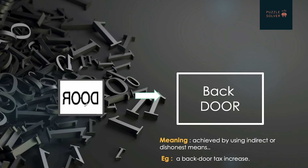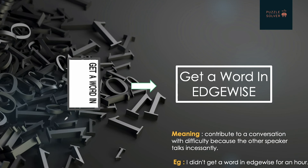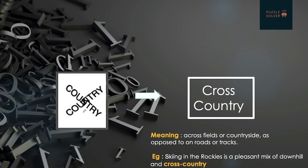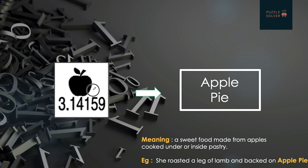Next, 'pineapple cake' but 'pineapple' is written inverted, so it is 'upside down pineapple cake'. Next is 'door' but the direction is backward, so it's 'back door'. Next, 'get a word in' is written along one edge of the box, so it is 'get a word in edgewise'. Two countries are crossing each other, so it's 'cross country'. Here apple is present and the value of pi — pi equals 3.14 — so it is 'apple pie'.